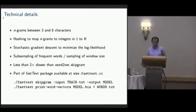Some technical details: we use n-grams between three and six characters. We hash the character n-grams to map them into K buckets to control model size. We use stochastic gradient descent to minimize the log likelihood. We use subsampling of frequent words and sampling of window size so that words closest to each other have more importance. Our implementation is less than two times slower than Word2Vec skip-gram, so it's reasonably fast and can be trained on large datasets. Our code is open source and available as part of the fastText package.